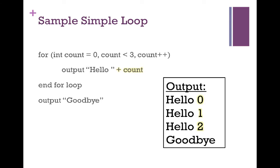Here's another example — the same simple loop, but with the value of count being printed each time so you can see that the first time through it is zero. Each time we finish the for loop body, we increase count by one, reevaluate, and if the condition is true we go back into the body. If it's false, we exit out.